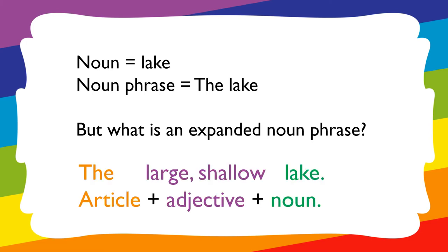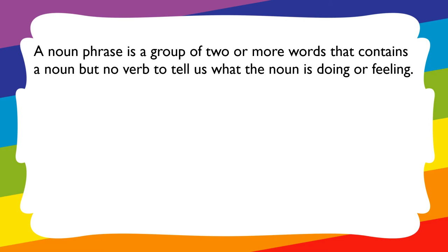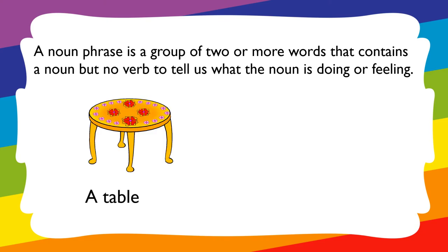So 'the large shallow lake' is our expanded noun phrase. Here we have an article 'the,' adjectives 'large' and 'shallow,' and the noun 'lake.' A noun phrase is a group of two or more words that contains a noun, but no verb to tell us what the noun is doing or feeling.